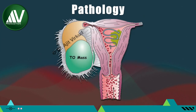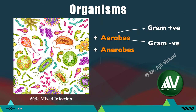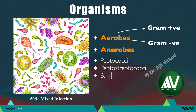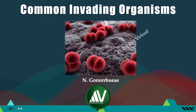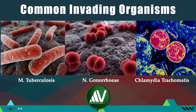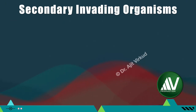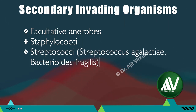Now I will discuss the pathology of PID. Organisms that can cause pelvic inflammatory disease are aerobic — gram-positive or gram-negative — or anaerobic organisms that are normal commensals of the vagina such as Peptococci, Peptostreptococci and Bacteroides. In the majority of cases, that is 60%, it is a mixed aerobic plus anaerobic infection. The organisms most commonly isolated in acute PID are Neisseria gonorrhoeae and Chlamydia trachomatis. However, in India, the most important primary invading organism is Mycobacterium tuberculosis, followed by secondary organisms such as facultative anaerobes and other gram-positive and gram-negative bacteria.